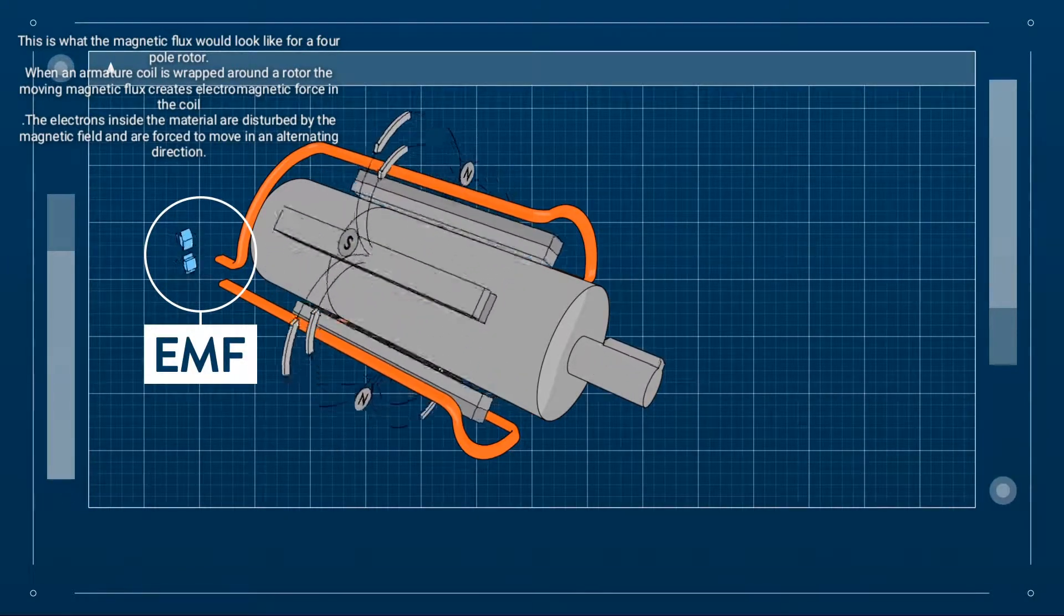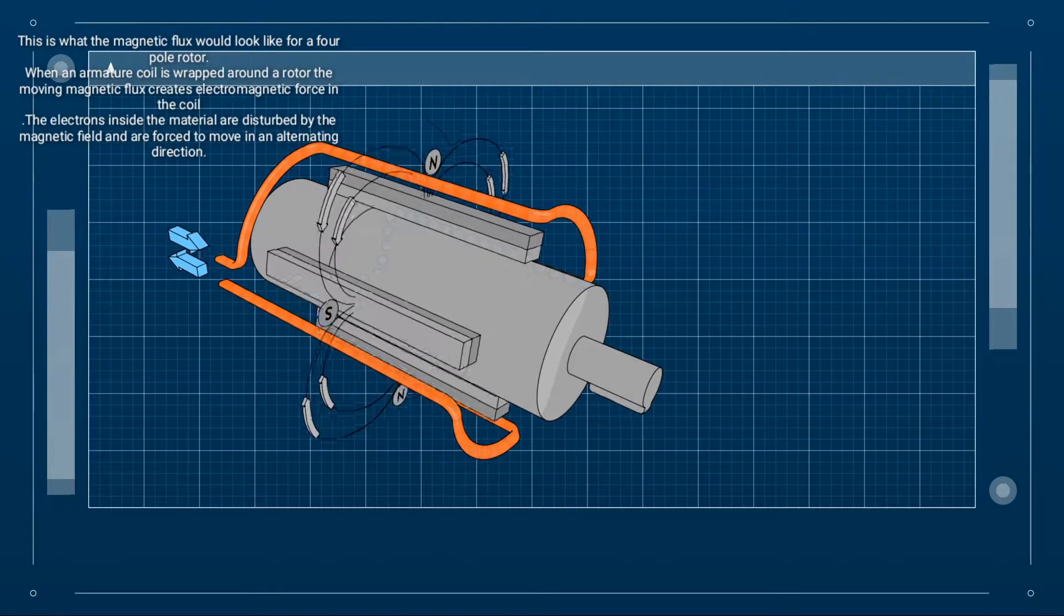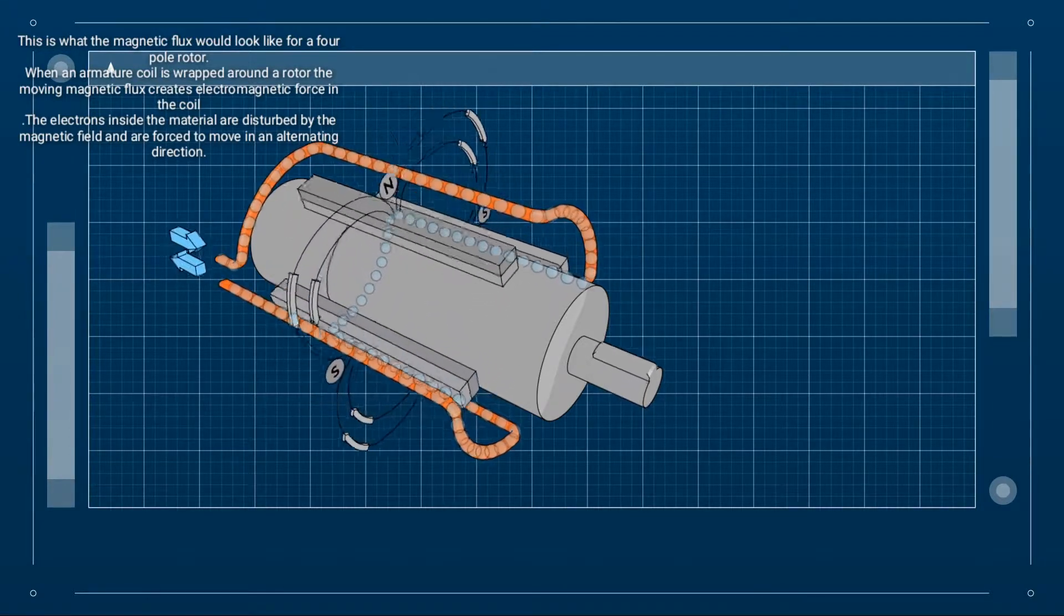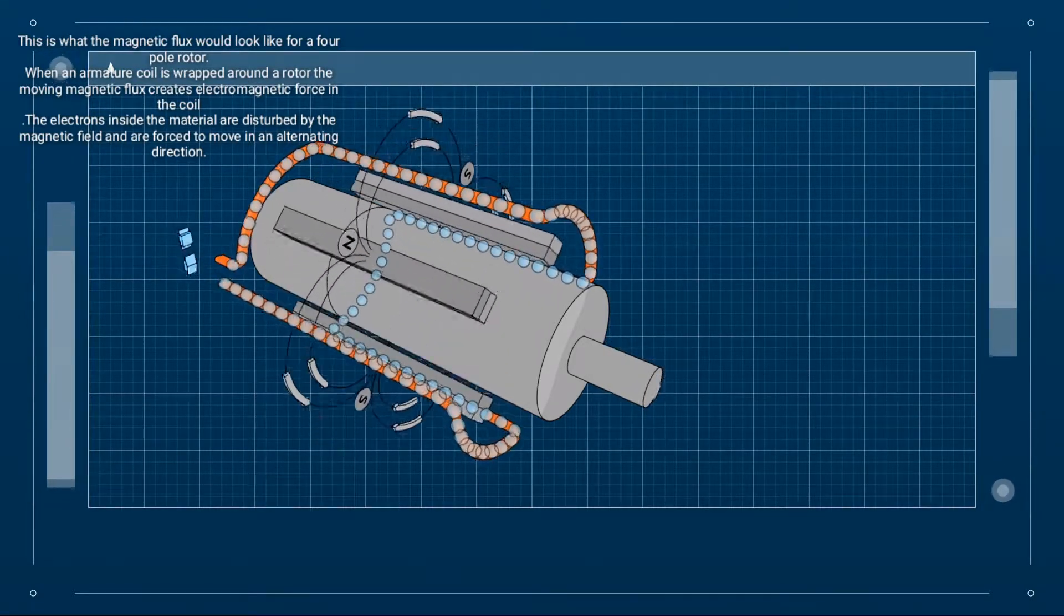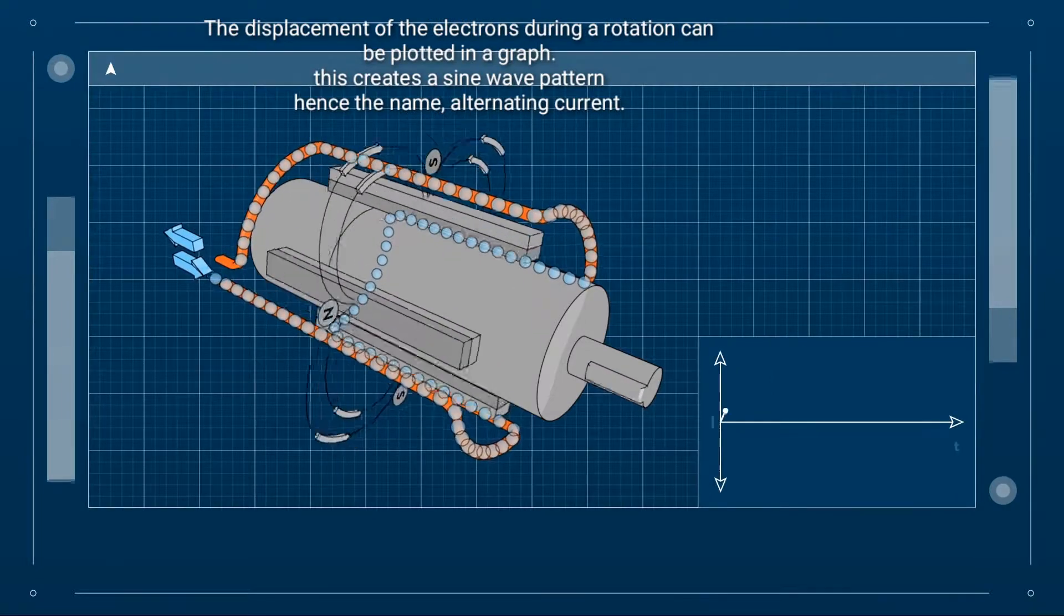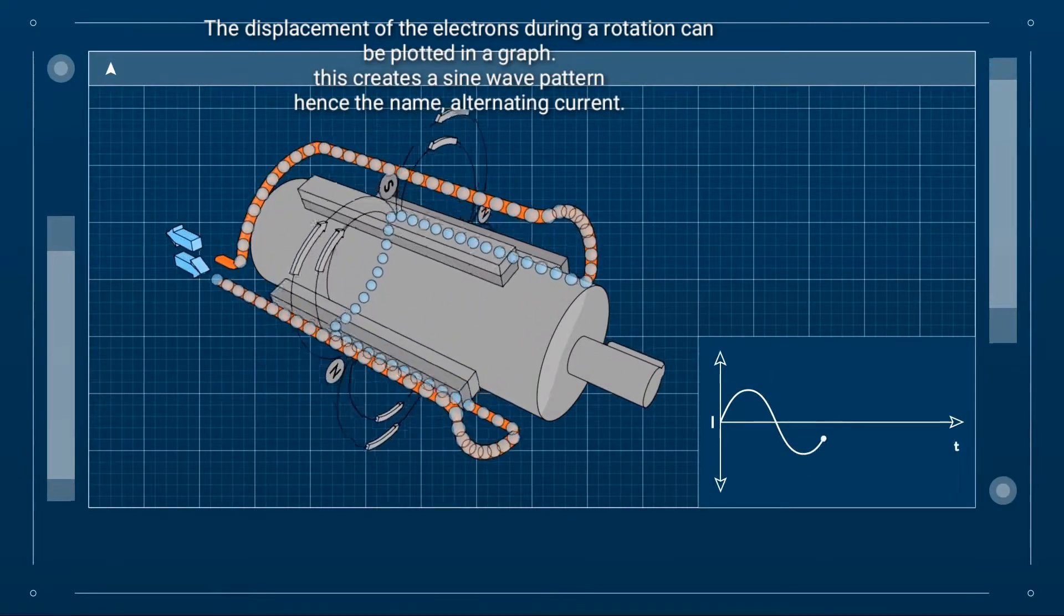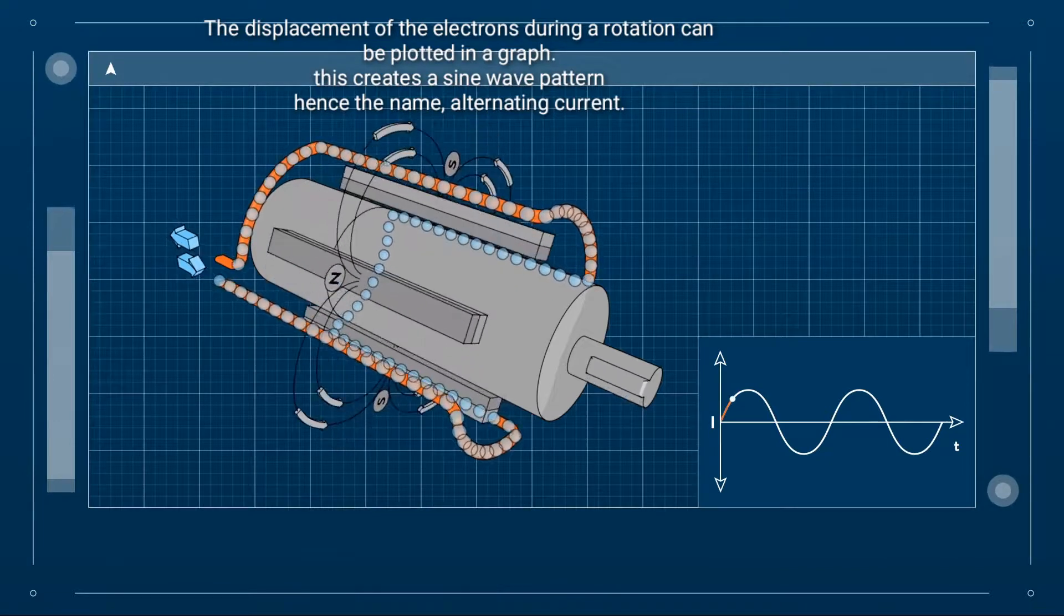The electrons inside the material are disturbed by the magnetic field and are forced to move in an alternating direction. The displacement of the electrons during a rotation can be plotted in a graph. This creates a sine wave pattern, hence the name alternating current.